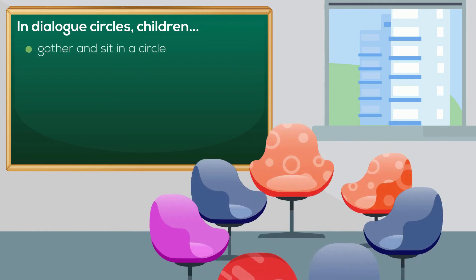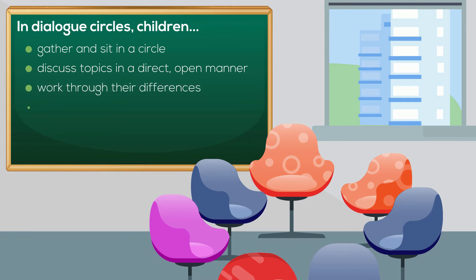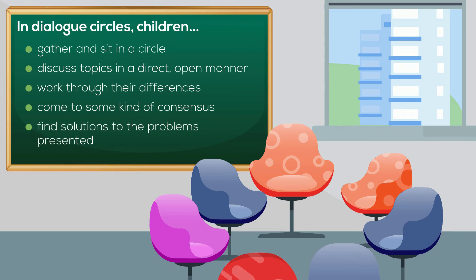What exactly are these circles? Schoolchildren gather and sit in a circle to discuss in a direct and open manner topics that are of interest to them, such as bullying. In this way the students can work through their differences and come to some kind of consensus. The discussions highlight fairness through understanding and pose challenges when they need to find solutions to the problems presented.